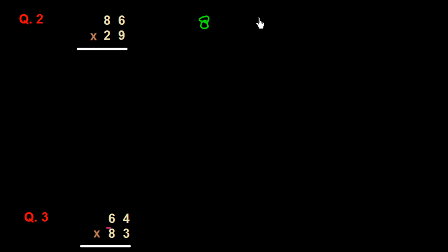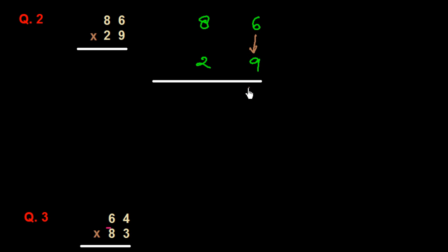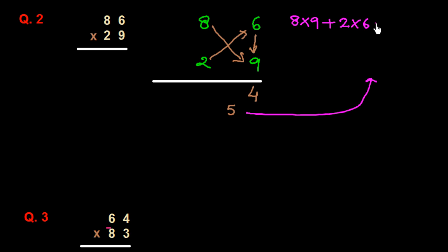I explain with one more example. We take 86 multiplied by 29. I write down 86 and 29, and draw a line. As in the previous question, we multiply the unit place vertically: 6 times 9 is 54. I write down 4 and carry 5. Then we do the crisscross multiplication of 8 with 9 and 2 with 6. So we multiply 8 into 9 plus 2 into 6 and add the carry 5.